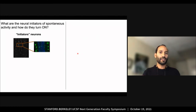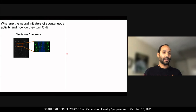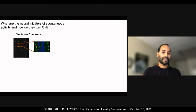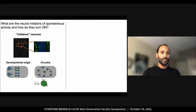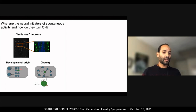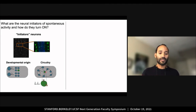This work lays the foundation for many interesting questions that I plan to pursue in my own laboratory. For example, what are the neural initiators of spontaneous activity, and how do they turn on? I am in the process of acquiring genetic access to a candidate set of initiator neurons. I will use the deep knowledge of neural development in the fruit fly to find out where these neurons come from. I will also use an electron microscope to determine the circuitry of these initiator neurons at single synapse resolution. And I will use genetics to understand how these initiators turn on.